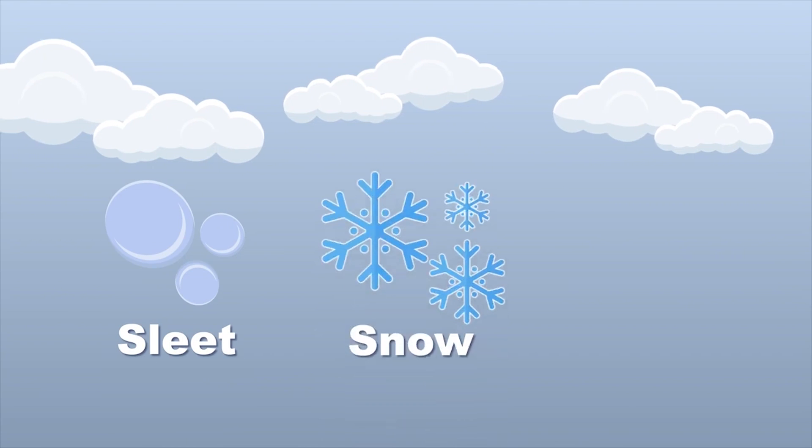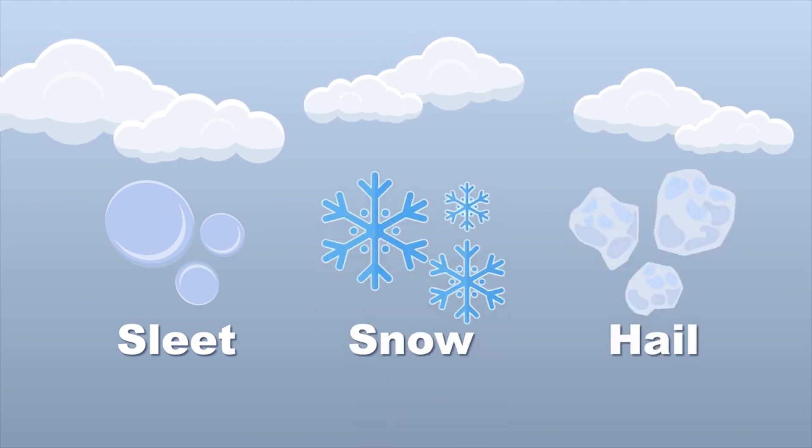Sleet consists of small ice pellets or frozen raindrops that fall from the sky to the ground then it stops. Sleet occurs when raindrops freeze before reaching the ground due to a layer of cold air near the surface. That's where it's found.